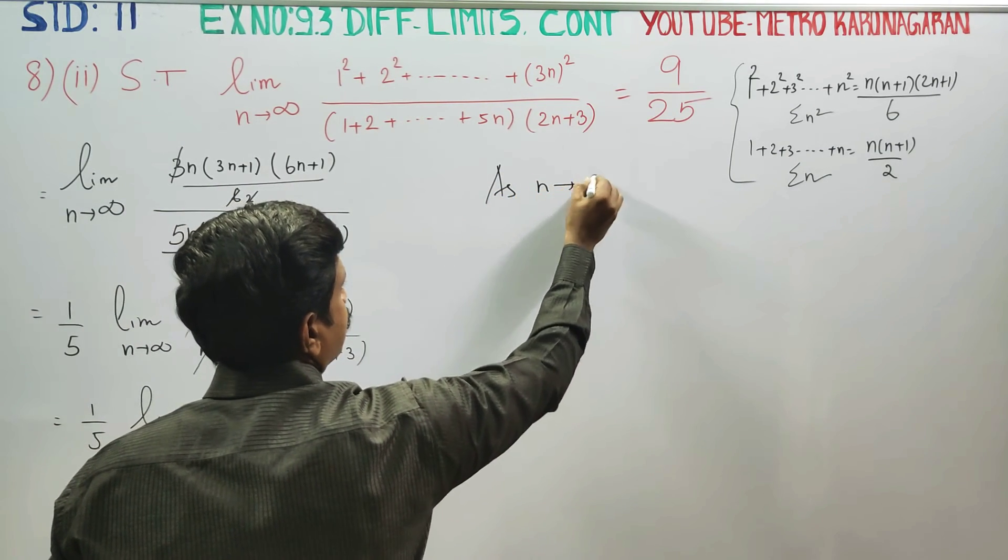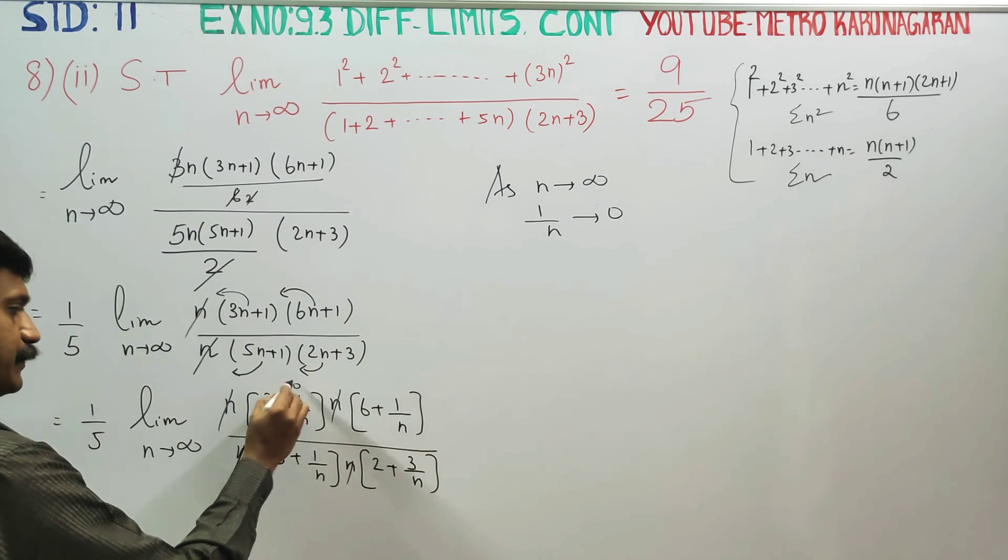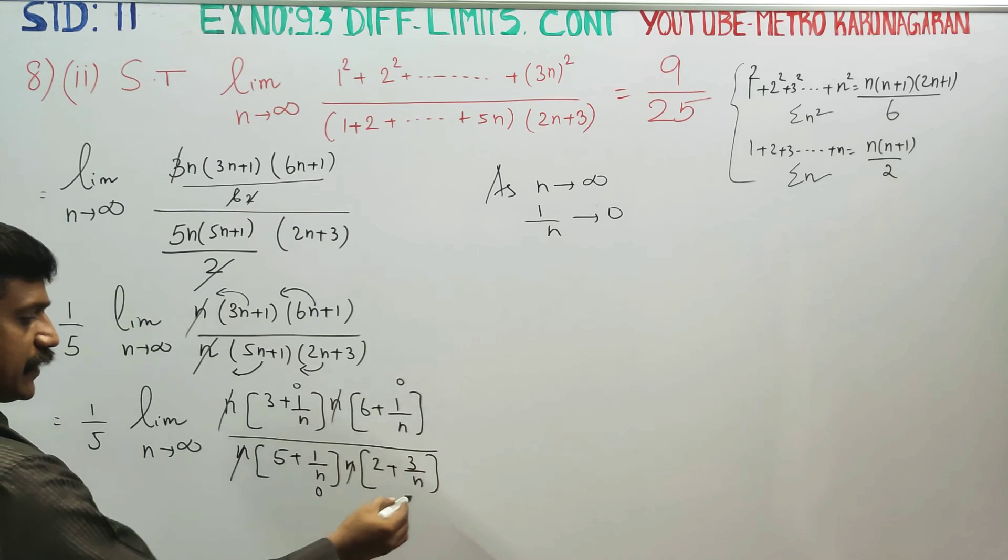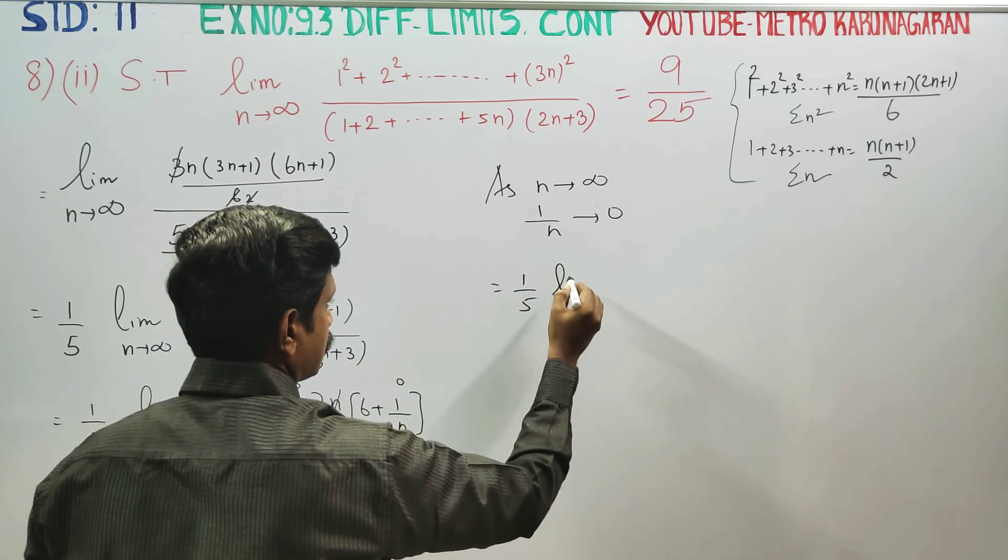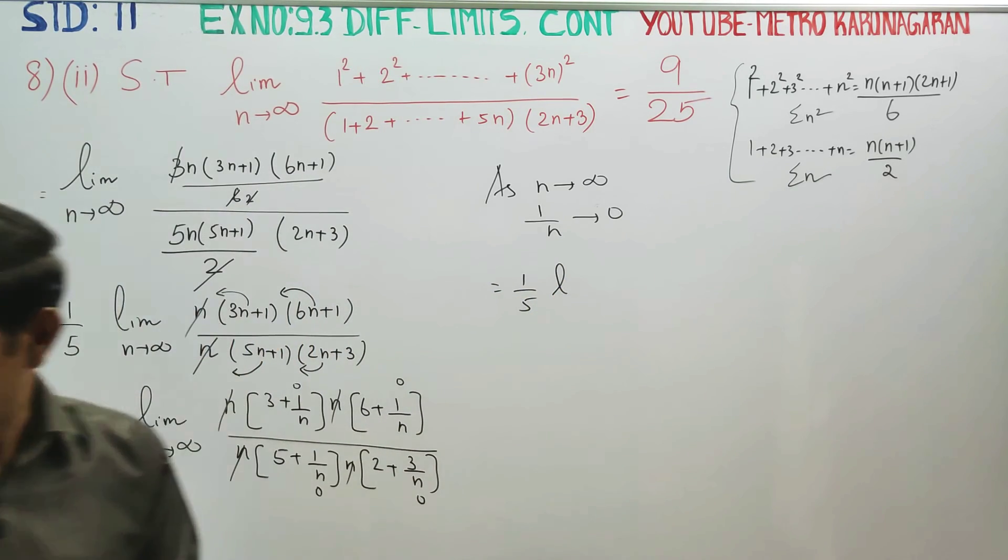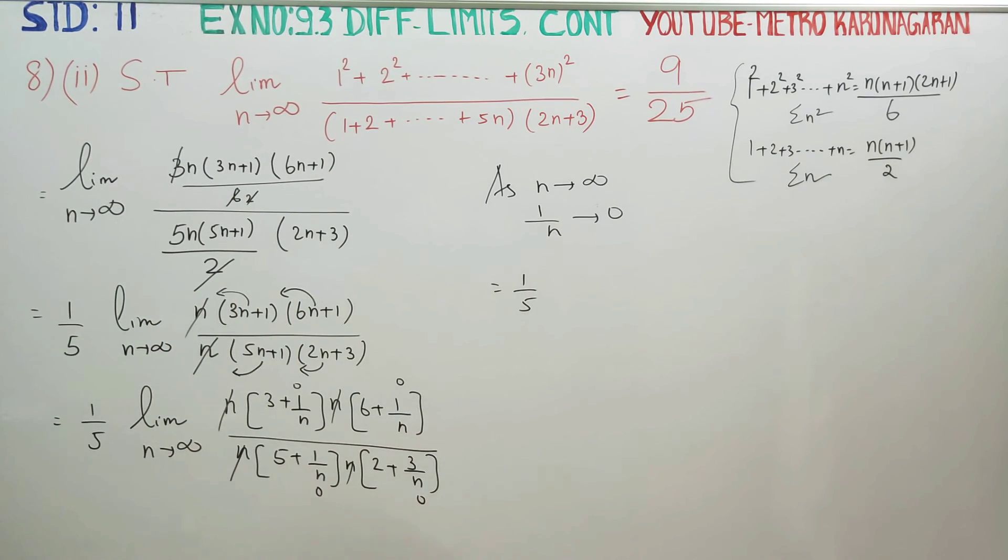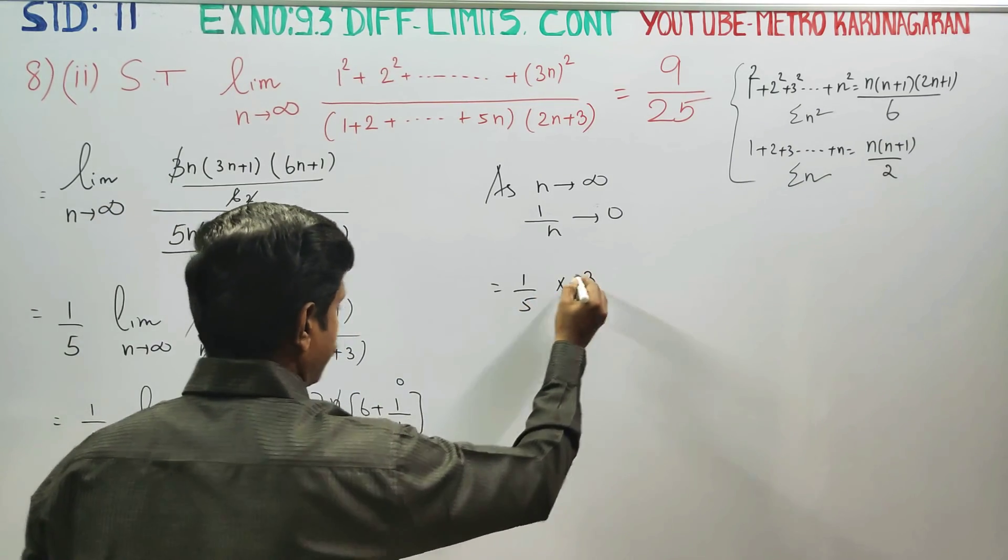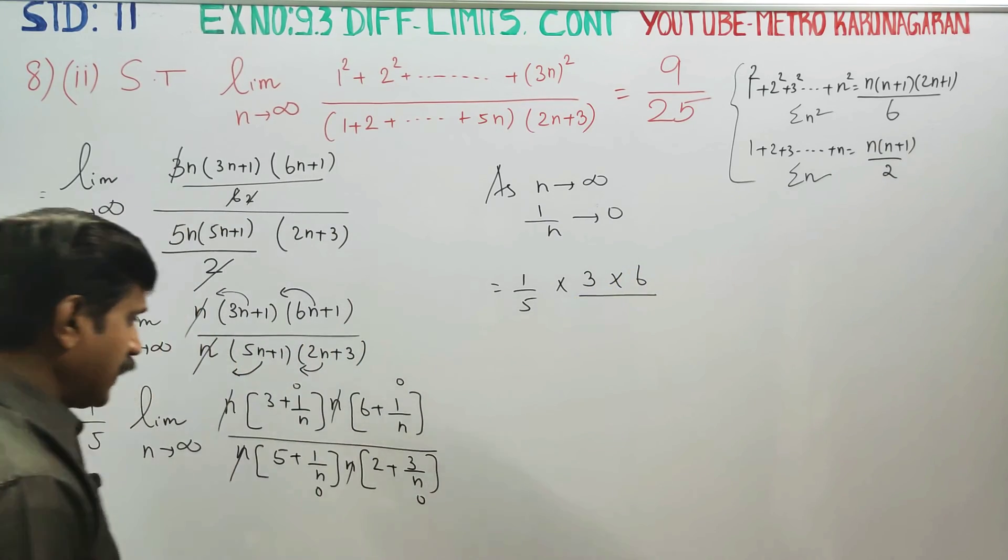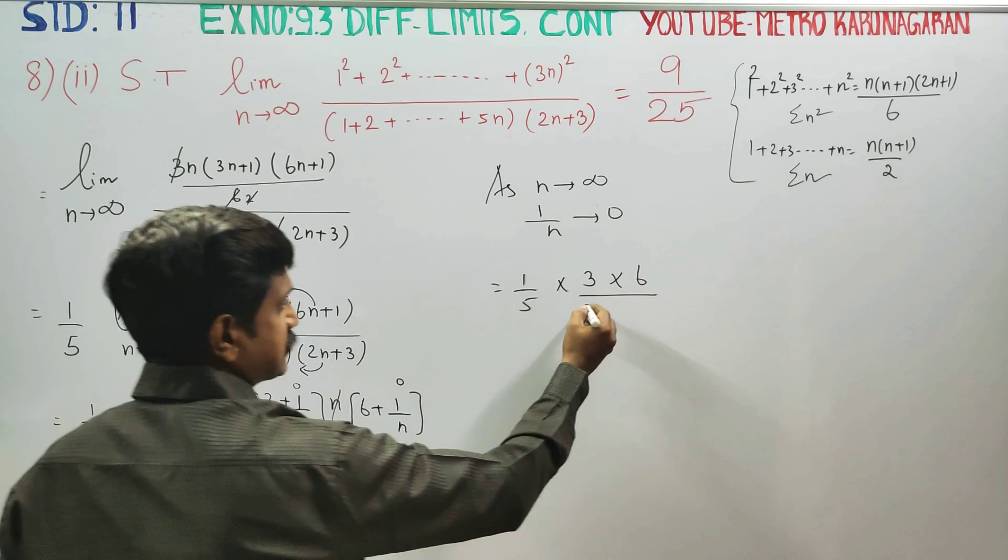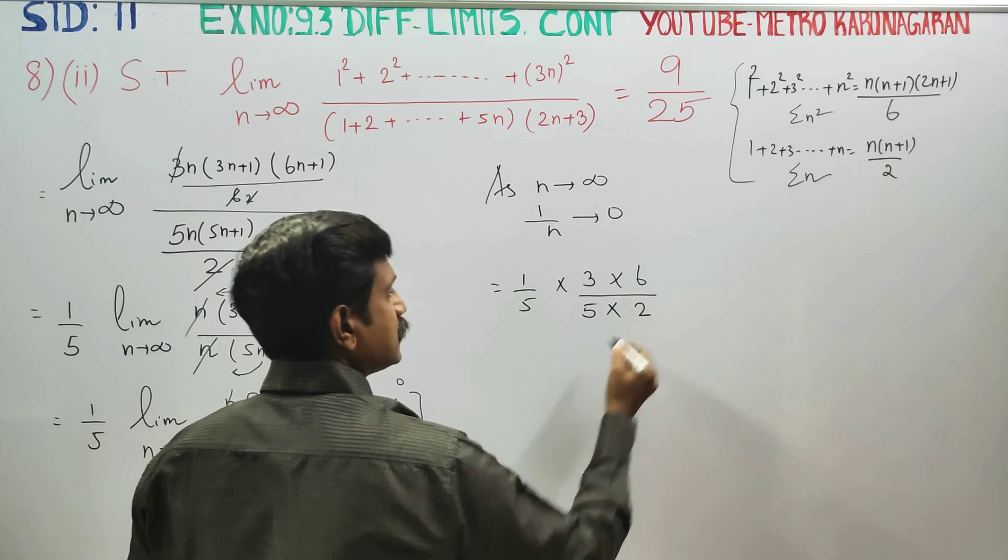As n turns to infinity, then 1 by n turns to 0. So at that stage, the numbers become: 3 plus 0 becomes 3, 6 plus 0 becomes 6, 5 plus 0 becomes 5, and 2 plus 0 becomes 2.